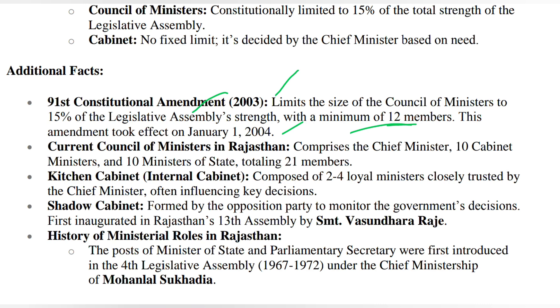Currently there is one chief minister, ten cabinet ministers, and ten ministers of state — though these numbers keep changing.